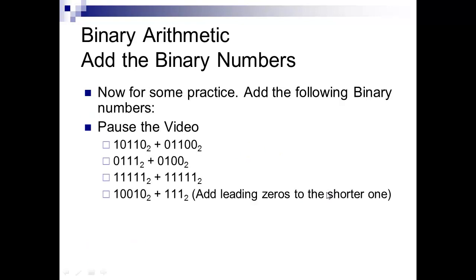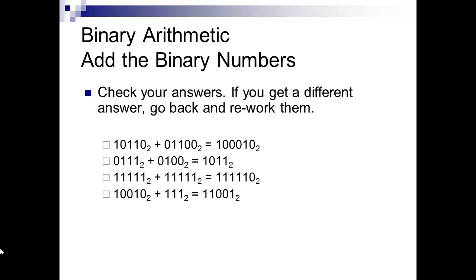Try these out on your own. Like the bottom one, you're just going to add a leading 0. Pause the video, and when you're ready to see the answers, just play it again. The answers are provided — if you need them worked out, just let me know. Go back and, knowing the answers, try to rework them to see where you went wrong. Usually you didn't carry a 1 when you should have, or you added three 1s and wrote 0, carry a 1 instead of 1, carry a 1. Those are the most common errors.